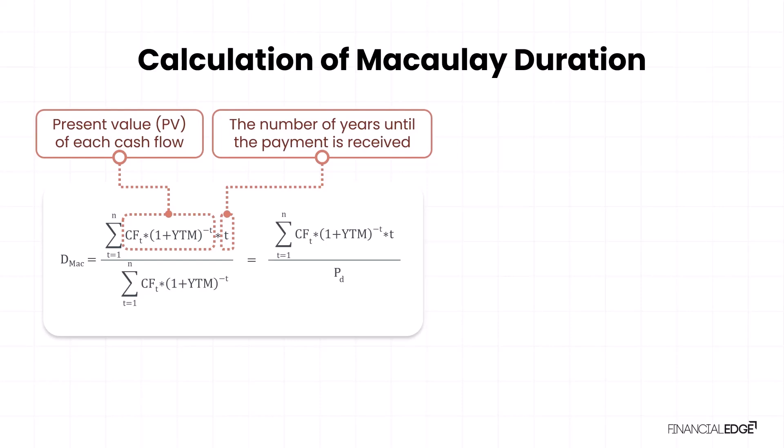Next, we sum all the maturity-weighted present values (PVs) and divide this total by the unweighted present values of the bond's cash flows. Essentially, this is the bond's price. The result is the weighted average maturity, which is expressed in years.